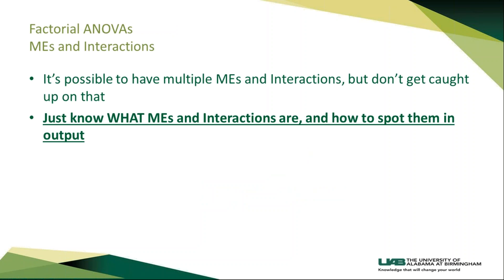It is possible to have multiple main effects. You can have all the independent variables in the factorial ANOVA have a main effect. And it's also possible that you have all main effects significant and your interaction or multiple interactions are also significant. Don't think that there's a restriction — if there is a main effect there isn't an interaction, or if there is an interaction there isn't a main effect. They're not mutually exclusive. You can have many main effects and many interactions depending on the factorial ANOVA.